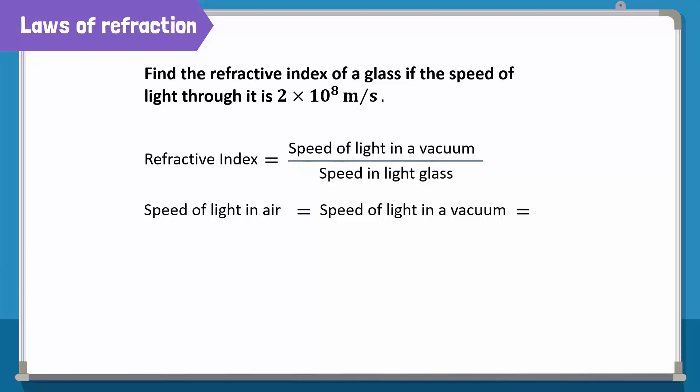By putting values in the formula and after calculations, we get 1.5 as the refractive index of glass. It has no unit as it is a ratio.